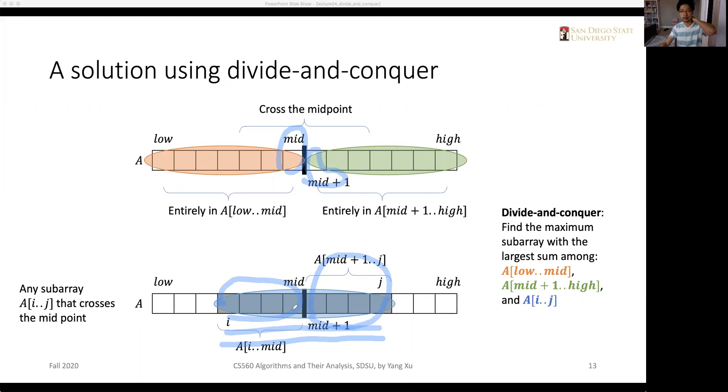There's a condition that i should be greater than mid and j should be greater than mid, but i should be smaller than mid. This blue subproblem is not a smaller instance of the original problem. But the orange one and the green one are just small instances, so we can solve these two using the recursive method.